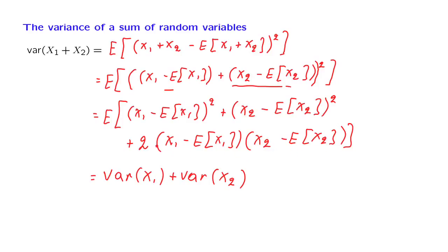And finally, the cross term, the expected value of it, we recognize that it is the same as the covariance of x1 with x2. And we also have this factor of two up here.